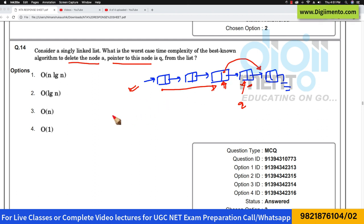So the function that you can write is something like this: delete, which is node star head and node star Q, where head is the pointer to this linked list and Q is pointing to the specific node. So first of all, you have to reach a node before this.